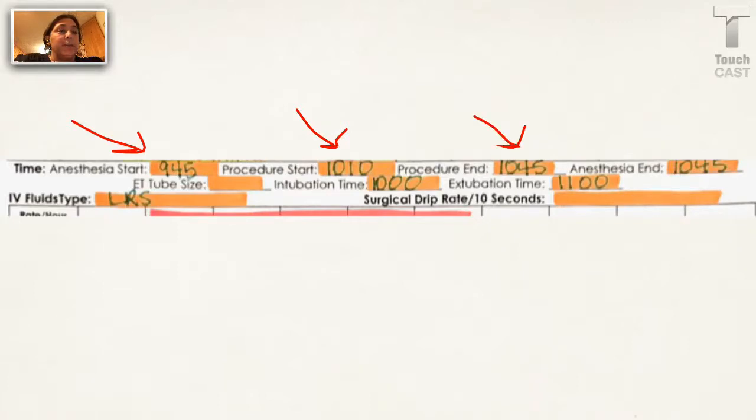Procedure end time is the time that the procedure is over, so after she's closed. And then anesthesia end time, that is when you turn off the vaporizer. They may be the same time as the procedure end, but they may be before. Intubation time, this is when you intubate them, the time you need to write down, as well as the time you extubate. Don't forget to put the ET tube size on.